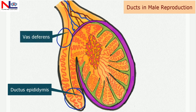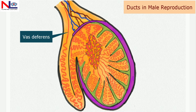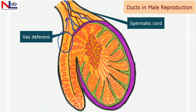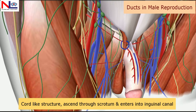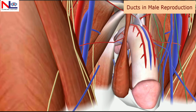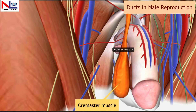The ductus epididymis at the tail portion of the epididymis is continuous with the vas deferens, and it becomes straight. The vas deferens ascends through the spermatic cord and enters into the pelvic cavity. The spermatic cord is a cord-like structure which ascends through the scrotum and enters into the inguinal canal through the inguinal ring.